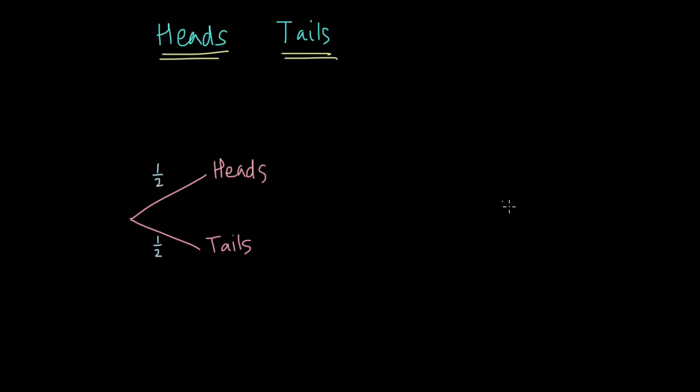And then say I flip my coin a second time. What are the possible outcomes of two coin flips? Let's just work it out on the side here. I can get heads and heads, or heads and tails, or tails on my first flip and heads on my second, or tails on both flips. So these are my four possible outcomes from two coin flips.